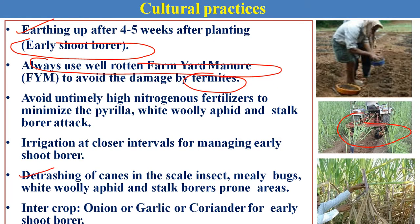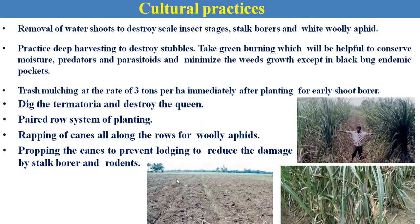Detrashing is one of the effective techniques — it means removing the lower dry leaves of the sugarcane. Detrashing helps reduce infestation of all sucking pests like scale insects, mealybugs, and sugarcane woolly aphids, as well as stock borers. Intercropping with onion, garlic, or coriander can be used in sugarcane to avoid infestation of the early shoot borer. Other cultural practices include removal of water shoots and deep harvesting to destroy different plant parts or stubbles. Trash mulching is also an important technique to avoid early shoot borer infestation.